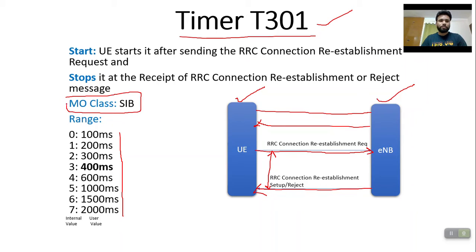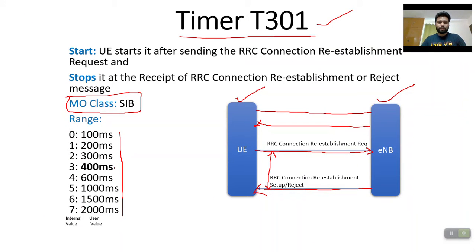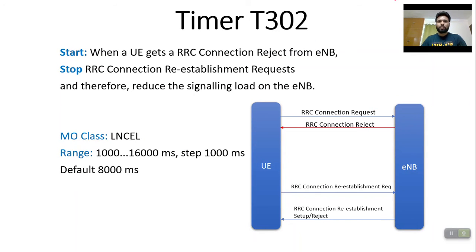Timer T301 also belongs to the SIB MO class, with the same user and internal values as T300. In the dump, you can see timer T301 under the SIB class. Here I am using value 3, which means 400ms.